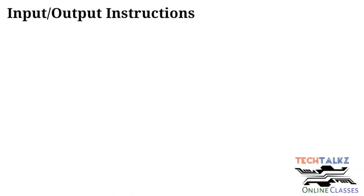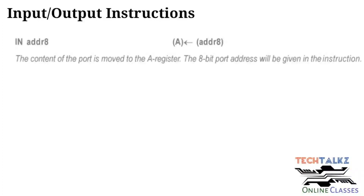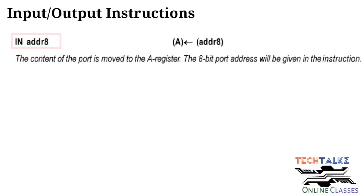The next group of instructions is I/O instructions, that is input or output instructions, related to external peripheral devices. The input instruction is IN followed by an 8-bit port address. When this instruction executes, the content of the port is moved to the accumulator, that is the A register. The 8-bit port address is given in the instruction itself — this is an example of direct addressing mode.